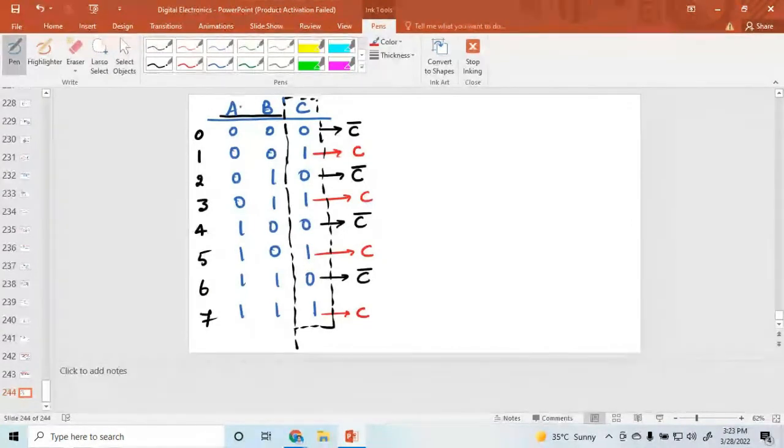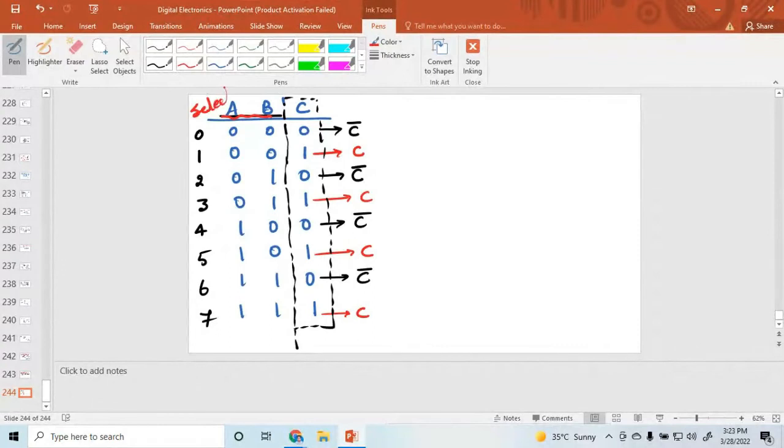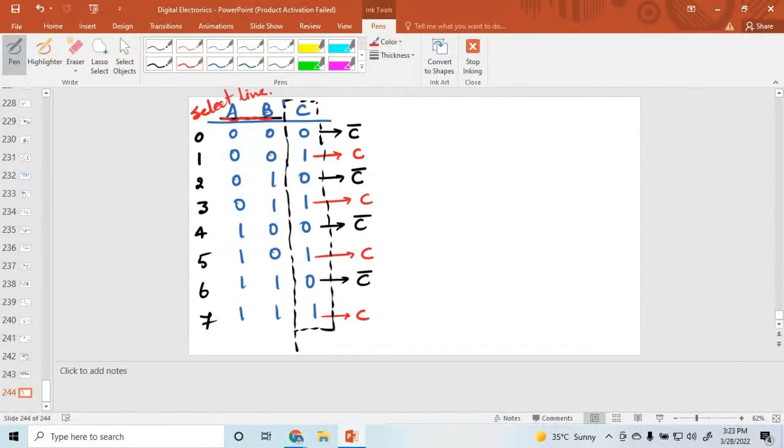Why I am choosing c? Because a and b is select line. So rest line is only c.